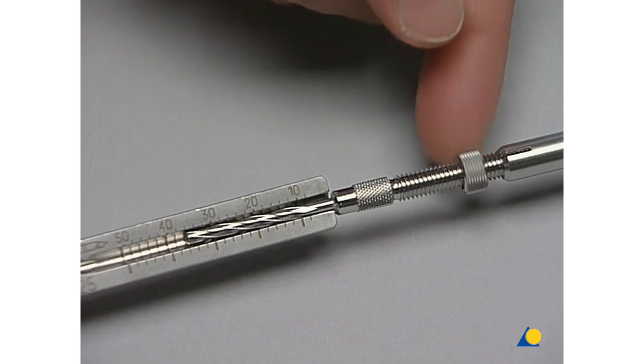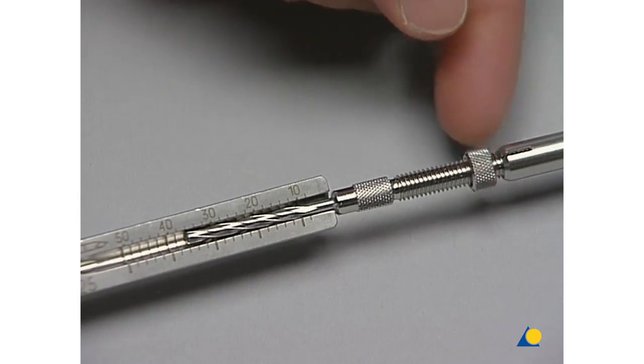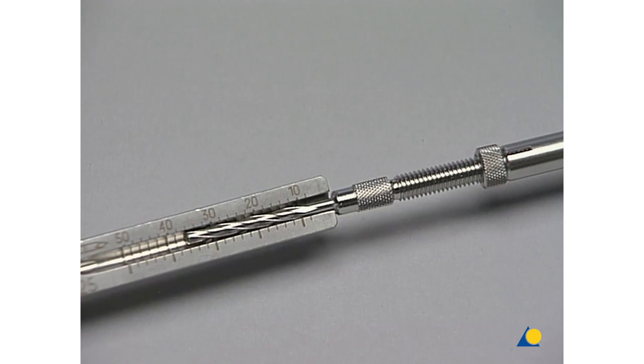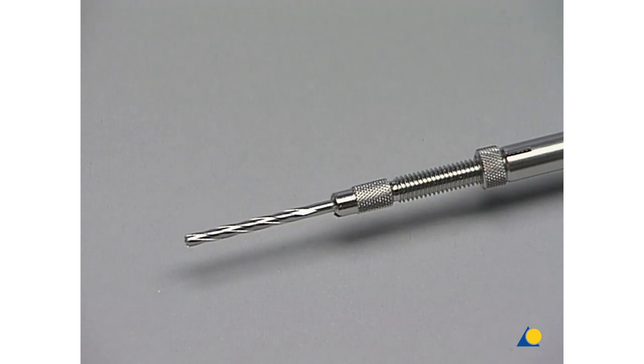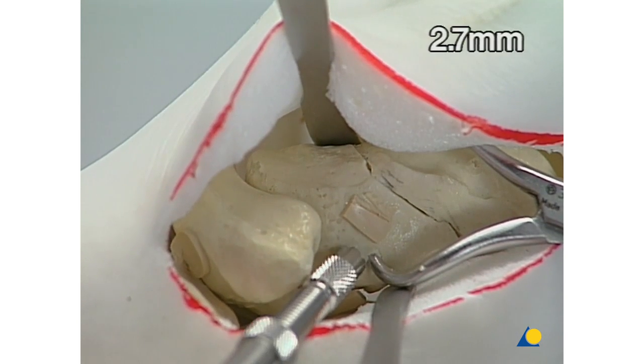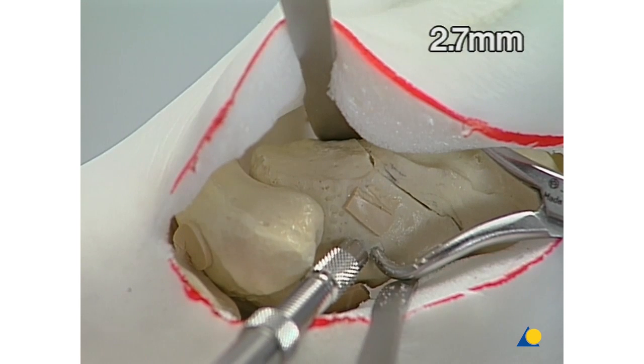In order to secure this setting, the knurled nut must always be screwed up to the stop. First, drill the hole using the 2.7mm cannulated drill bit.